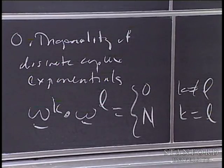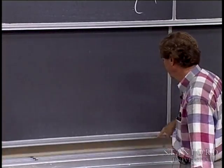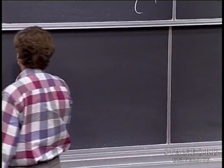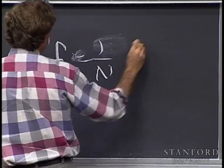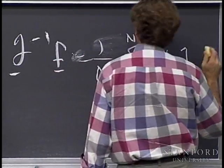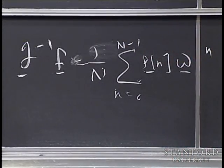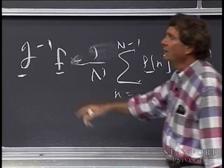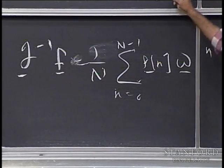The appearance of the constant N is the source of so much pain and suffering with the discrete Fourier transform because of the way it enters into various formulas. In particular, it enters into the definition of the inverse discrete Fourier transform, which is 1 over N times the sum from n equals 0 to N minus 1 of F_n times omega to the plus n. So the inverse DFT looks almost like the DFT with a plus sign instead of minus and an extra factor of 1 over N out front.